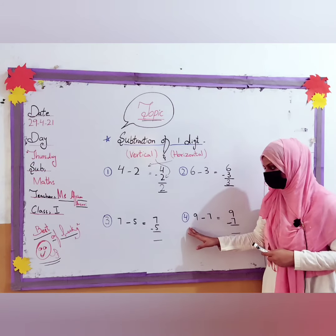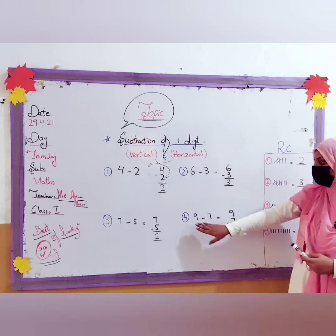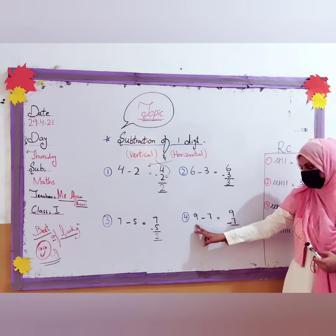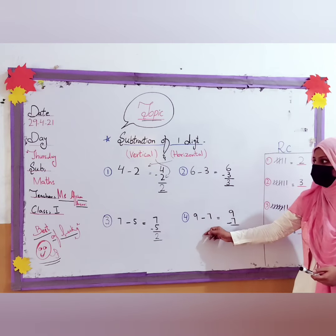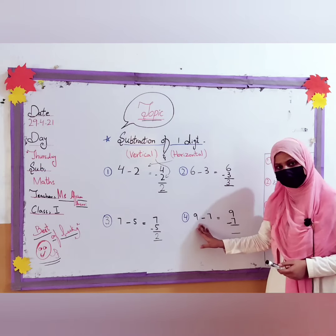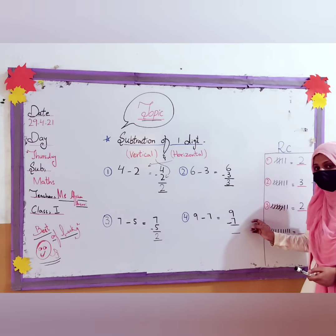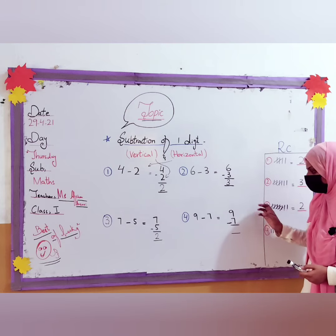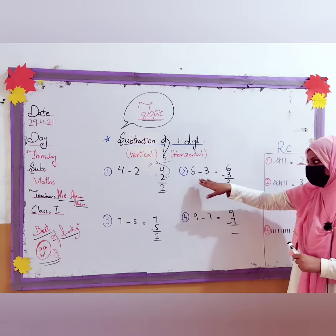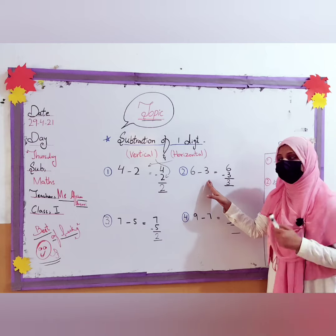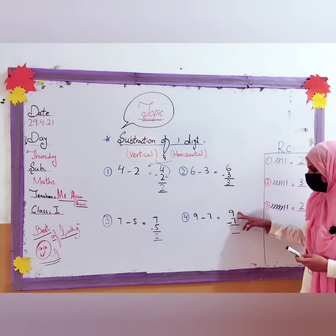Now in question number 4, the first digit is 9 and it is 9 minus 7. This is horizontal because the value is left to right. And the second one is vertical — up and down value. But you have to write just one answer. So over here you have to draw 9 lines and minus 7.